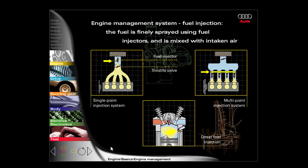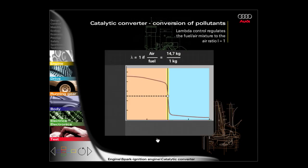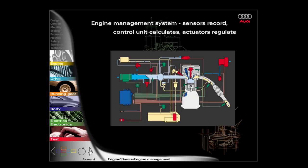In the case of direct fuel injection, the fuel is injected directly into the cylinder where it is mixed with air prior to ignition. The task of lambda control is to regulate the fuel-air mixture to the air ratio of lambda equals 1, because at lambda equals 1 the catalytic converter operates most efficiently.